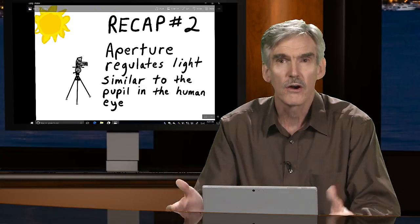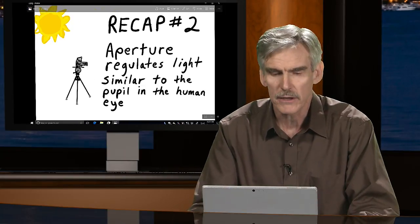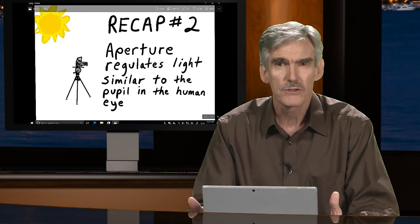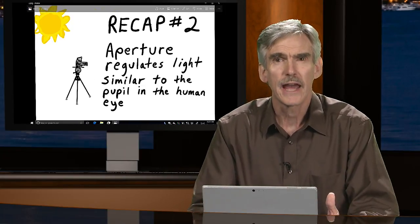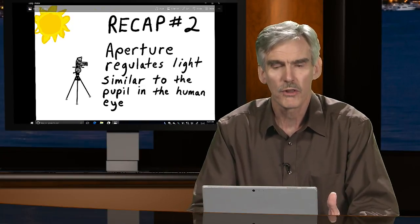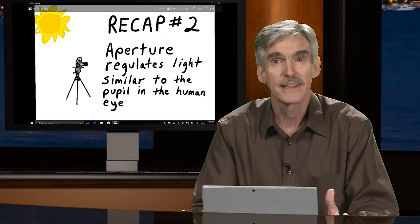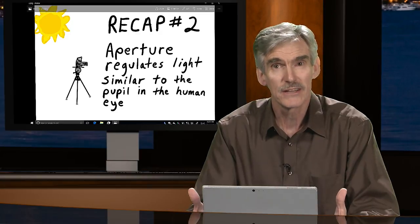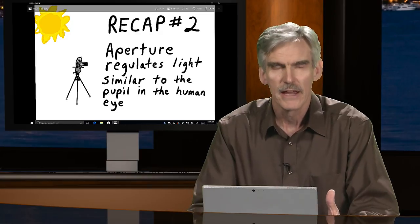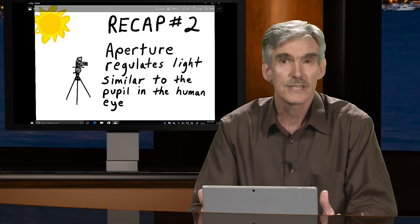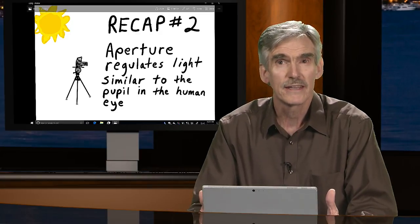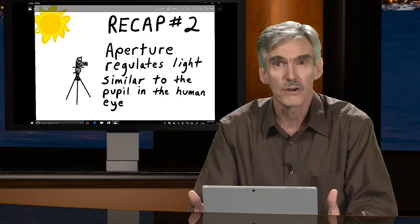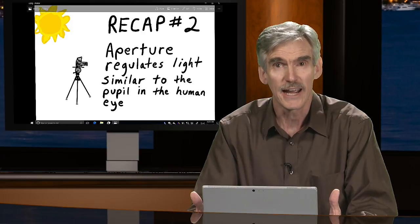This is really important because if you can't focus light there really is no point in photography. We have to be able to control the light, manipulate the light, and bring all of those points of light to a focal point to make those images really meaningful. We also talked about the aperture controlling and regulating the light that comes into the camera.